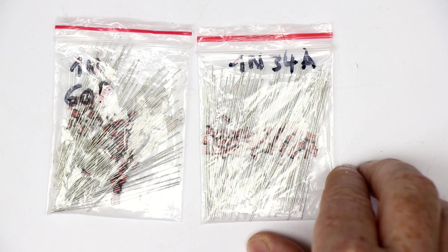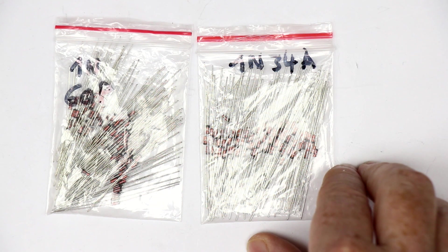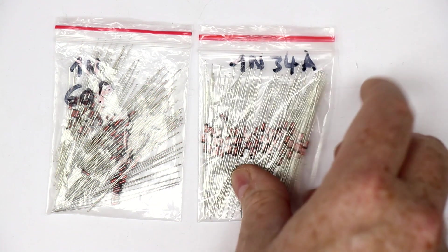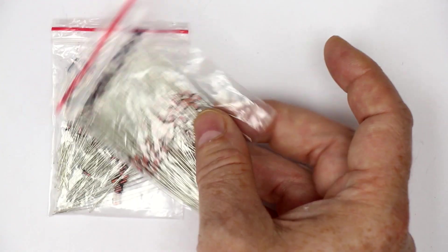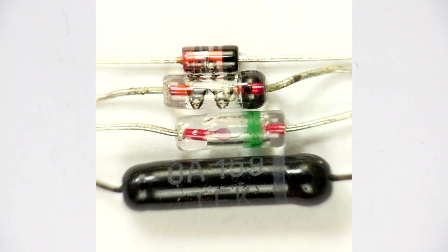They both are originally germanium diodes, but if you search on eBay or AliExpress you will usually find these orange colored diodes. I've made a separate video about how to discern Schottky diodes from real germanium diodes.